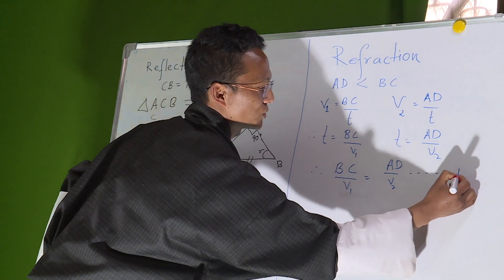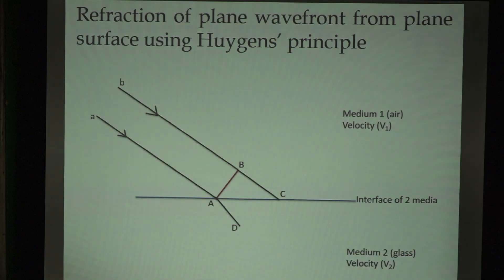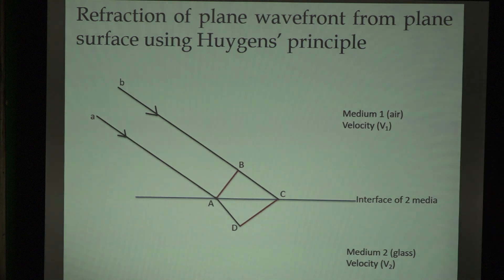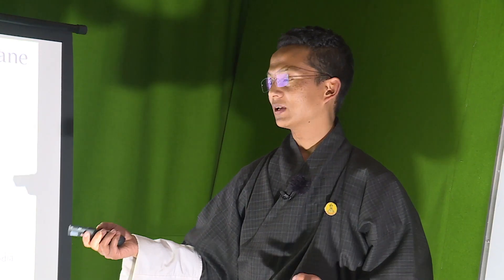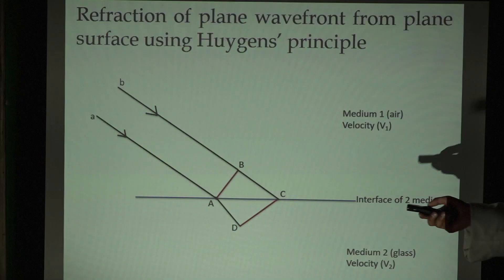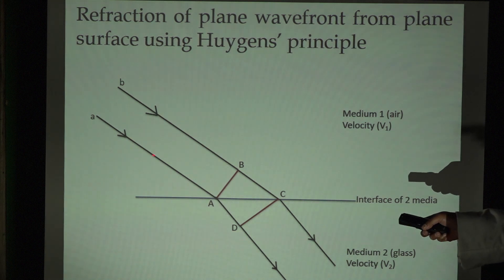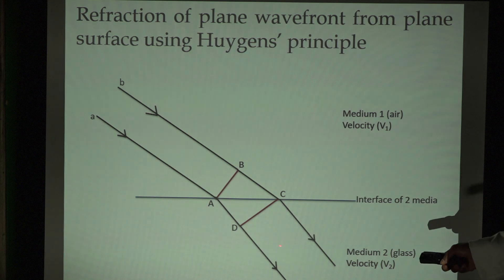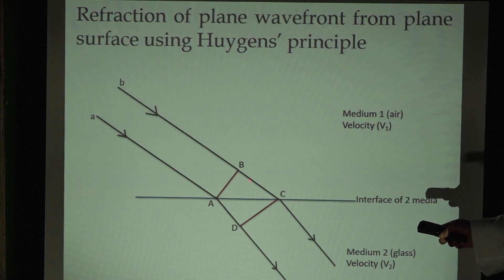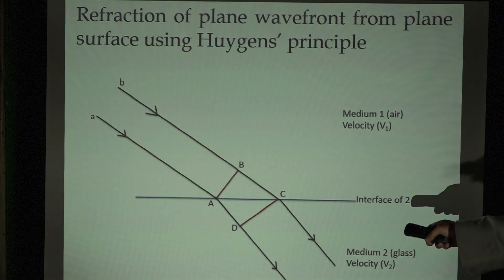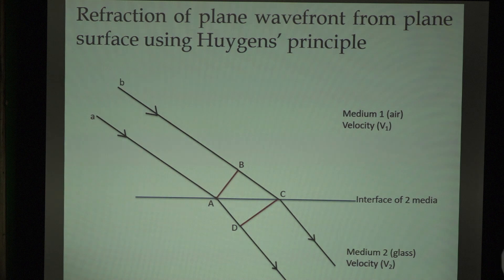Coming back to the diagram — drawing a perpendicular line through points D and C gives us the second wavefront, called the refracted wavefront. From there, the two rays move in that direction and we can clearly see that refraction has taken place. As per the properties of light, the ray should pass straight through; however, when it enters the second medium, there is a change in direction — that is what we call refraction of light.